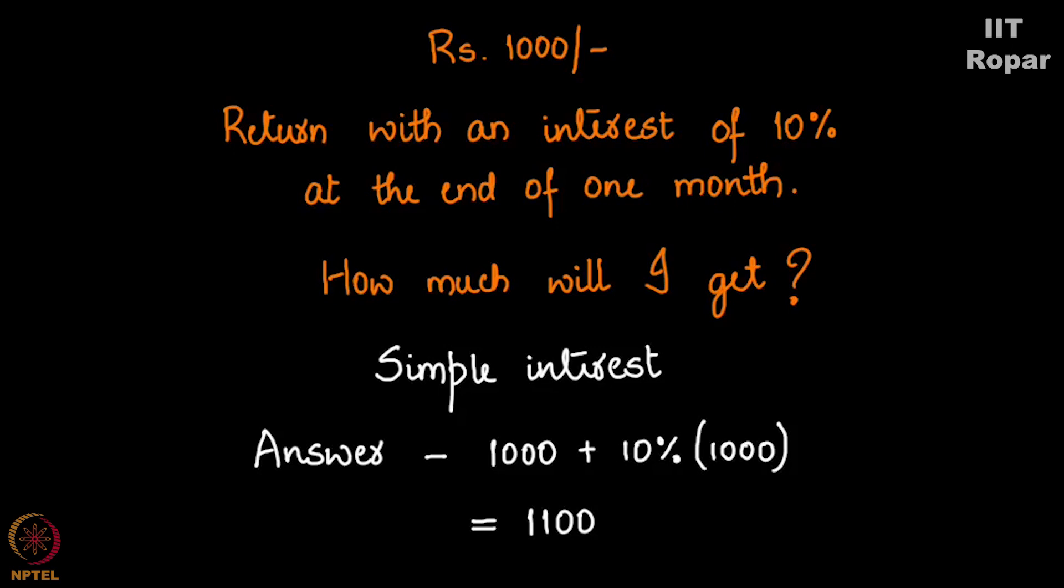What if I say for two months you compute the interest and give me at the end of two months? If it's going to be hundred rupees per month, 10% rate, for two months it will be hundred plus hundred, two hundred, so twelve hundred is what you will be giving me at the end of two months if it's for two months duration.